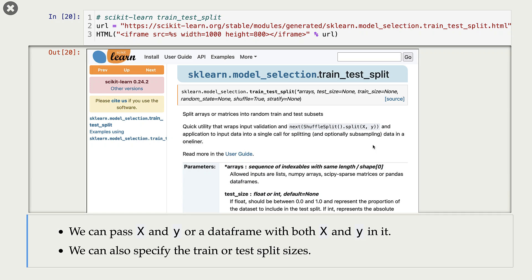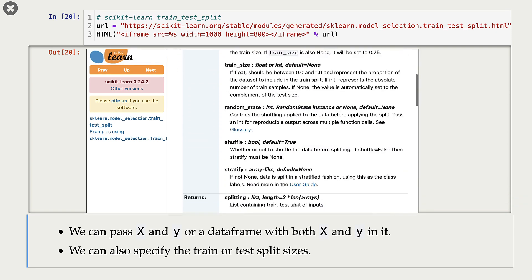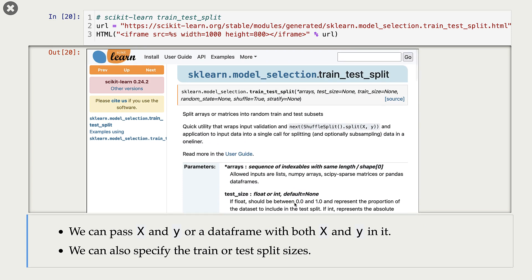How do we do it using scikit-learn? scikit-learn has this very handy function called train_test_split. I'm showing you documentation of the function here. So in this function, basically you can pass X and Y, or you can also pass your data frame. If you pass it X and Y, it will give you X_train, Y_train, and X_test, Y_test. So training portion of X and Y and test portion of X and Y. If you provide it a data frame, then it will give you train portion of the data frame and test portion of the data frame.